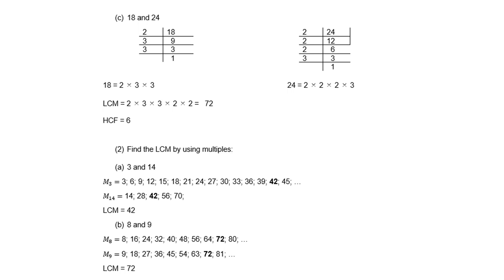For 18 and 24: 18 = 2 × 3²; 24 = 2³ × 3. For LCM, take the biggest powers — there are three 2s and two 3s, so LCM = 72. For HCF, both share 2 × 3 = 6, so the HCF is 6.